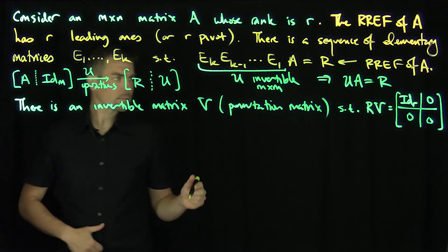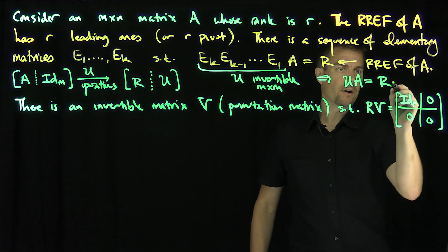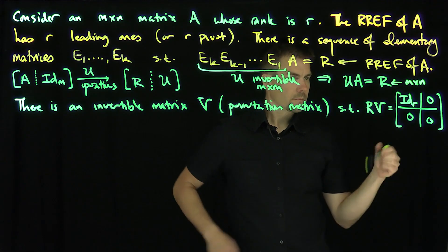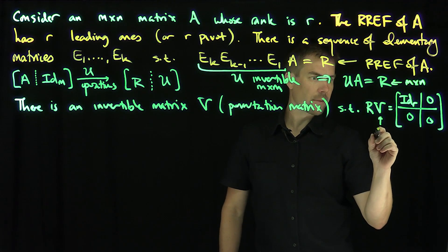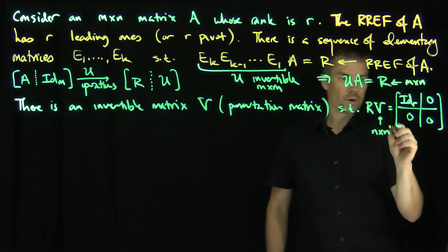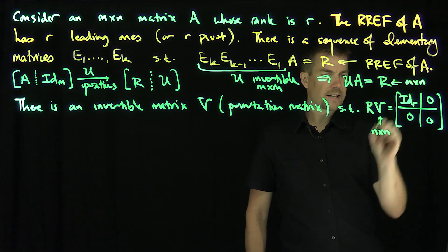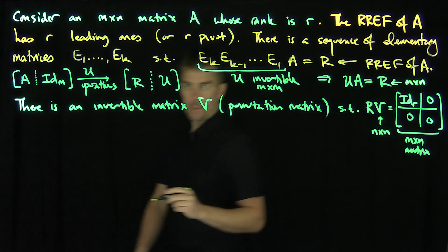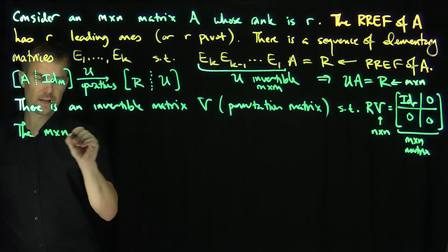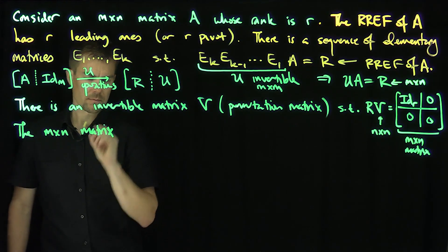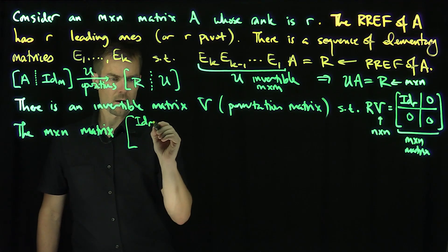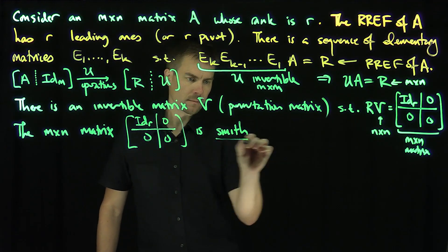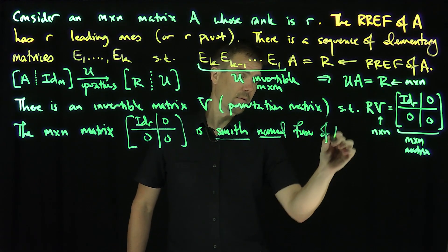R is an M by N matrix. V has to be an N by N matrix, so R times V is M by N times N by N, giving an M by N matrix. The M by N matrix with identity R in the top-left R by R block and zeros elsewhere — that is the Smith Normal Form of the matrix A.